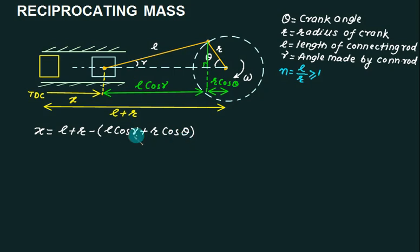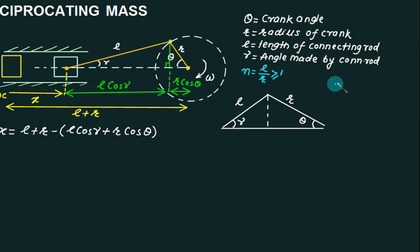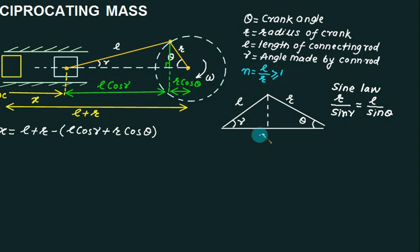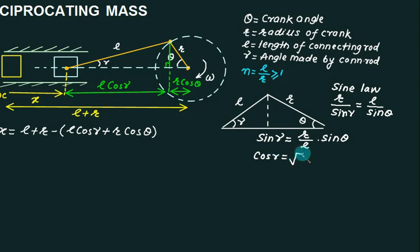To establish a relation between gamma and theta, I will apply the sine law. According to the sine law, R divided by sine(γ) equals L divided by sine(θ). So sine(γ) equals R divided by L, multiplied by sine(θ). Since N equals L by R, this means R/L equals 1/N. Therefore sine(γ) equals sine(θ) divided by N. Now I need cos(γ).